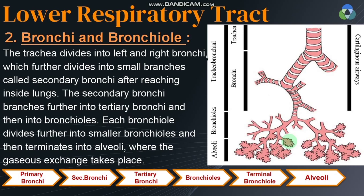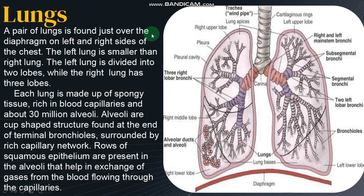The alveoli are the terminal structures and the actual site of gas exchange. The primary bronchi divide to form secondary bronchi, then tertiary bronchi — which have cartilages — and then bronchioles, which lack cartilage rings. The terminal bronchioles end in alveoli, which inflate when we inhale and provide a very large surface area for exchange of gases.